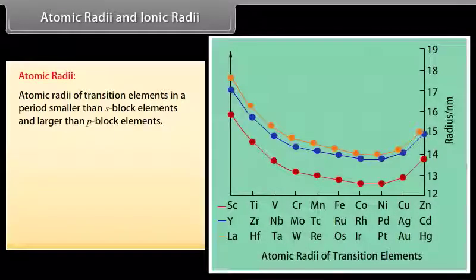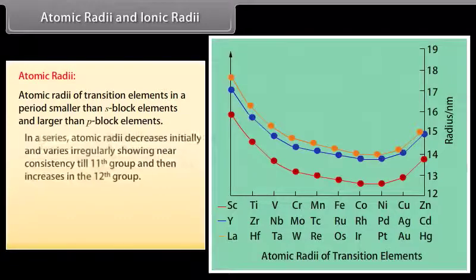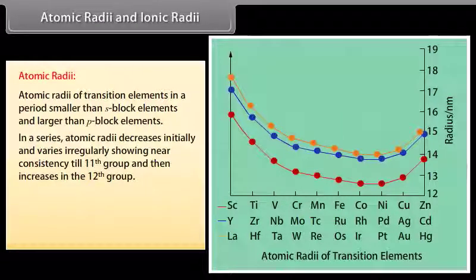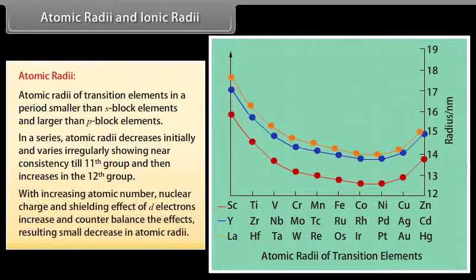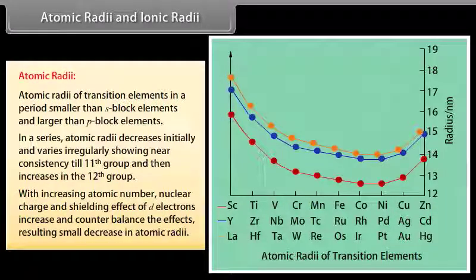Atomic radii of transition elements in a period are smaller than S-block elements and larger than P-block elements. In a series, atomic radii decrease initially and vary irregularly, showing near consistency till the 11th group and then increase in the 12th group. With increasing atomic number, nuclear charge and shielding effect of D-electrons increase and counterbalance each other, resulting in a small decrease in atomic radii. In zinc, cadmium, and mercury, there is an increase in atomic radii due to electron repulsion, which exceeds the nucleus' outermost shell attraction.